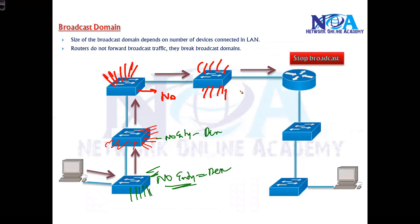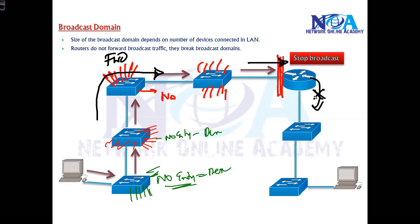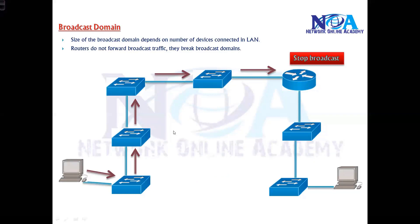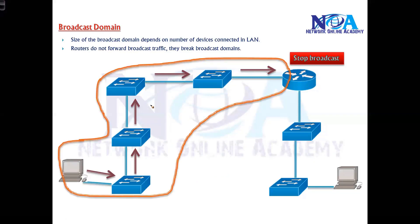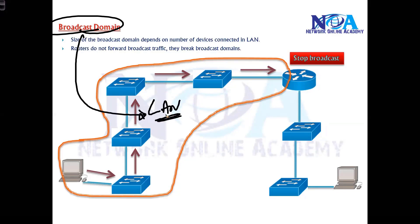This broadcast propagation stops at the router. Normally switches forward frames from one interface to another, but when a router receives a broadcast on one interface it will not forward it on another interface, because a router connects two different networks. It will not forward broadcasts from one LAN to another LAN. So the broadcast domain represents how far the broadcast travels — essentially the size of the LAN. You can compare a broadcast domain to the size of a LAN.